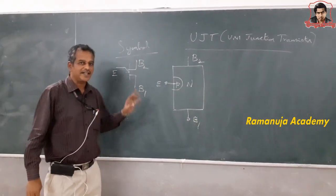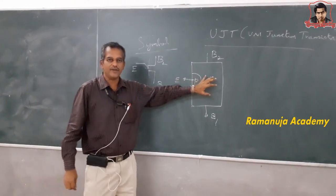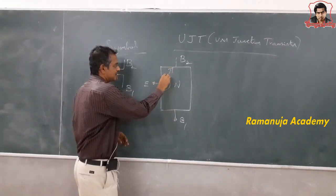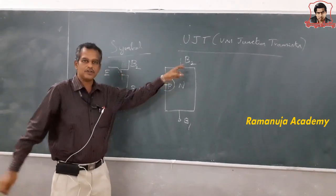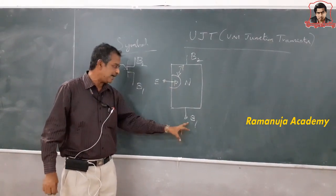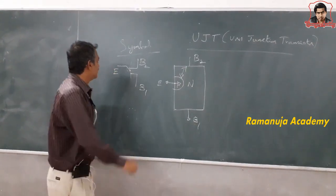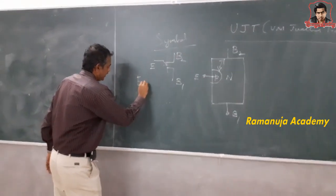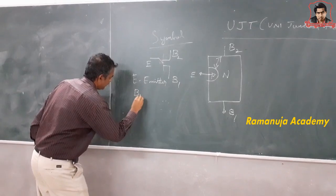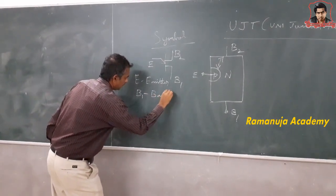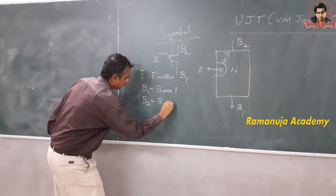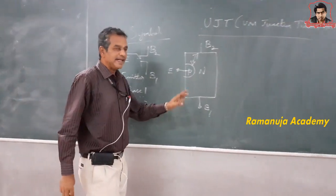This diagram shows the construction of a unijunction transistor. Again, the distance between the base 2 terminal and the emitter is closer than the distance between the emitter and the B1 terminal. So E is the emitter, B1 is base 1, and B2 is base 2.